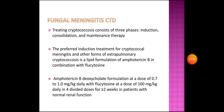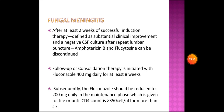Treating cryptococcosis consists of three phases: induction, consolidation, and maintenance therapy. The preferred induction treatment is a lipid formulation of amphotericin B in combination with flucytosine, or amphotericin B deoxycholate at 0.7 to 1 mg/kg daily with flucytosine at 100 mg/kg daily in four divided doses for at least two weeks. After two weeks of successful induction therapy, defined as substantial clinical improvement and a negative CSF culture, amphotericin B and flucytosine can be discontinued.